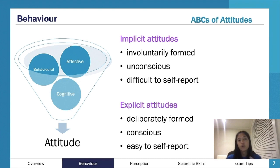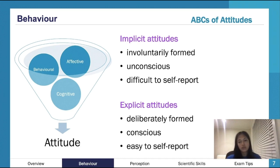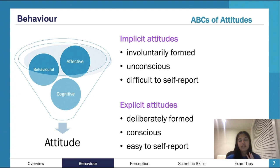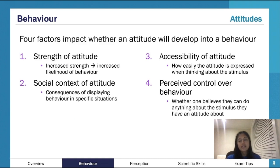In the ABC model: affective refers to your emotions and feelings, behavioral to your behavior, and cognitive to your thoughts and opinions. These components form your attitude — your emotions, thoughts, and feelings influence your attitude toward certain things. There's almost a two-way street: your attitude influences your behavior, but your behavior also influences your attitude. Cognitive components — formed opinions and decisions — also feed into your overall attitude.